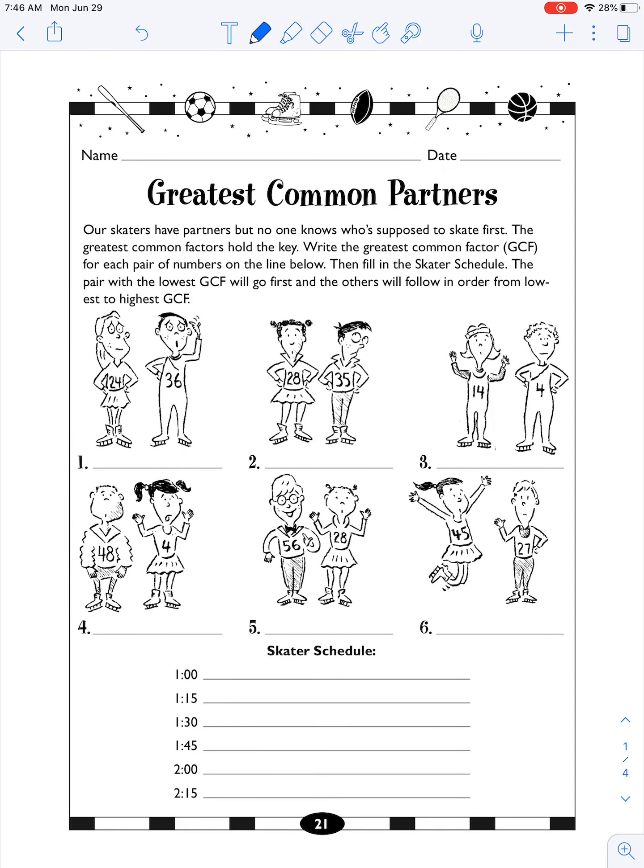Okay, first up is review of our challenge from yesterday. We need to find the GCF, the greatest common factor, between these two sets of numbers. Basically, what number is it that will divide evenly into both numbers that are on the person's chest? Or we can think of what's the highest number, the biggest number, that multiplies with another number to get that number.